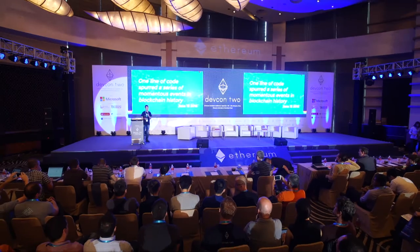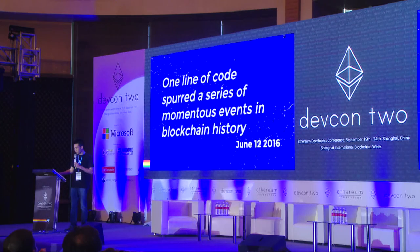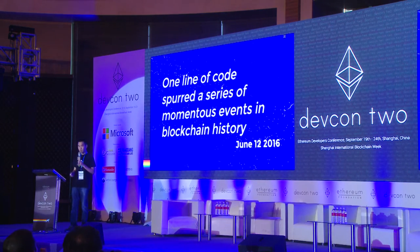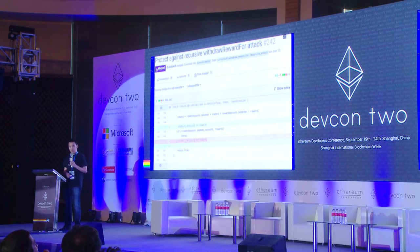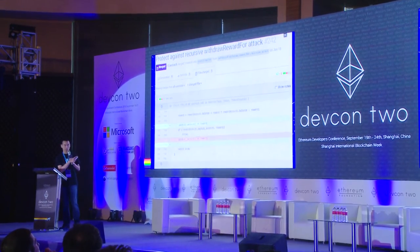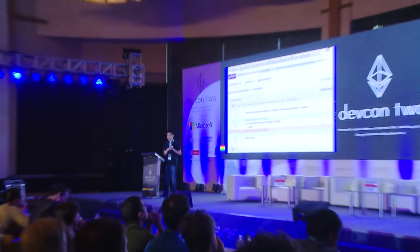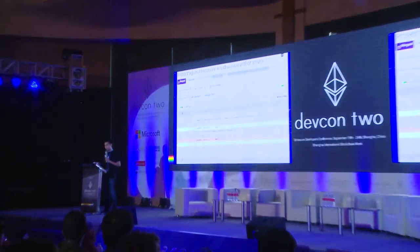One line of code spurred a series of momentous events in blockchain history. The line of code in red was moved up to where the green line is, and that was done to neutralize a re-entrancy exploit in the following line — rewardaccount.payout — which when performed on an attacker's account would lead to what happened to the DAO.